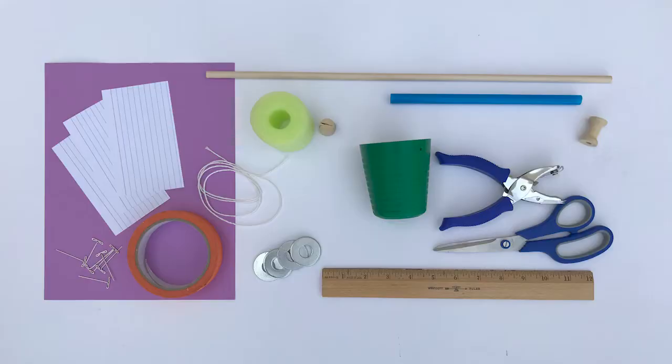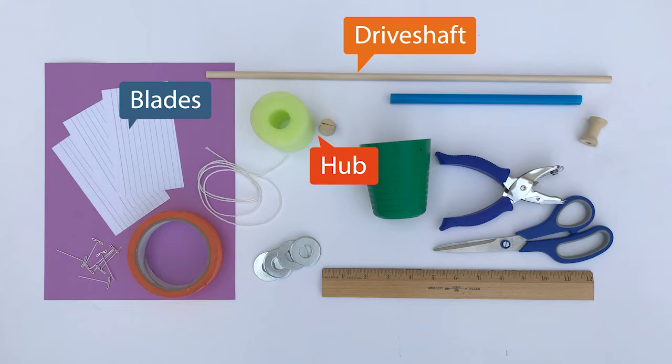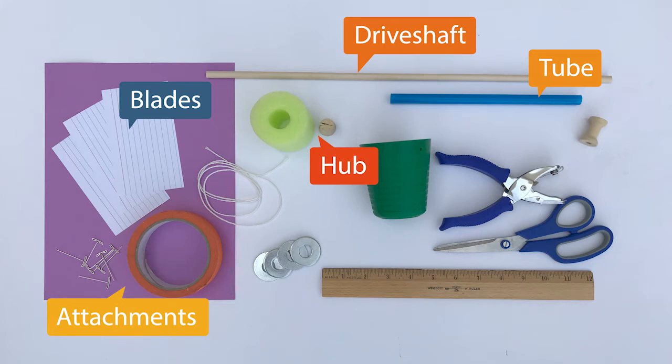To complete this activity, you'll need to gather materials from around the house to construct your MacGyver windmill. Make sure you check with an adult on what you're allowed to use. Here are the main parts you'll need: blades, a hub, a drive shaft, a tube for holding the drive shaft, and items to attach all parts to each other, such as pins or tape.